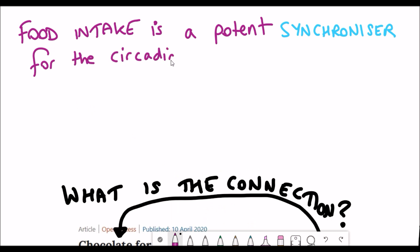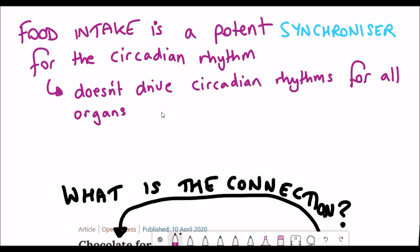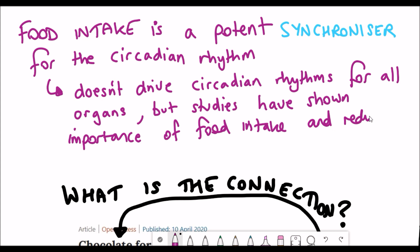Basically food intake is a potent synchronizer for the circadian rhythms. So like light and dark cycles, food intake can also play a role in coordinating circadian rhythms for some organs, not all tissue types.